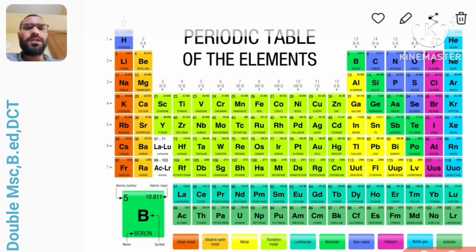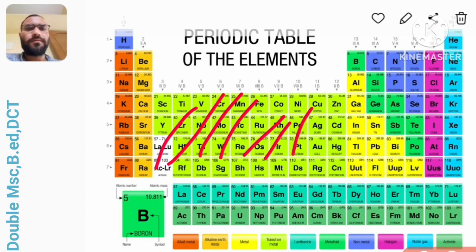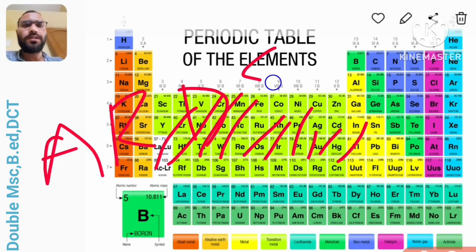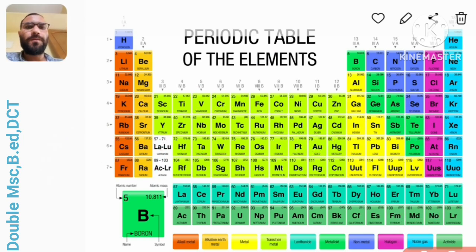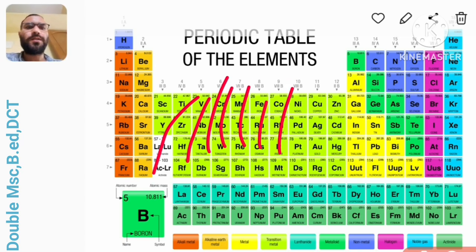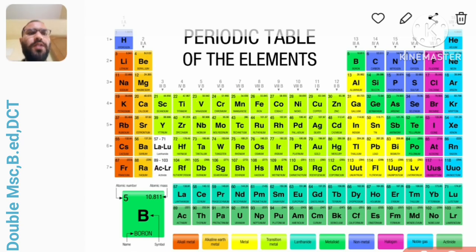Now going to the last series that is called the 6d series that starts from actinium up to copernicium. Here you have to remember: a r d s b h m then d r c. A r d s b h m and d r c. It means actinium, rutherfordium, dubnium, seaborgium, bohrium, hassium, meitnerium, darmstadtium, roentgenium, copernicium.